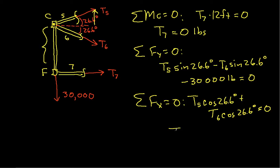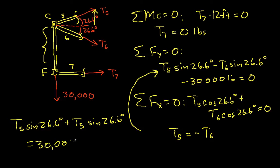And so, this tells us that T5 is equal to negative T6. So, we can take this and plug it in to this equation to get T5 sine 26.6 degrees plus T5 sine 26.6 degrees. And this is equal to 30,000 pounds, from which we can compute that T5 is equal to 33,500 pounds. And T6, then, will be minus 33,500 pounds.